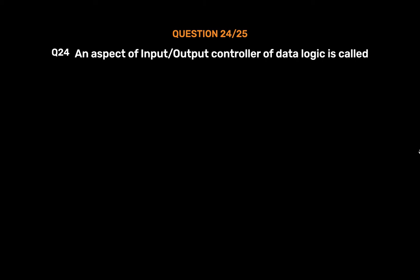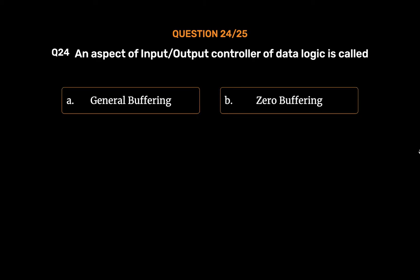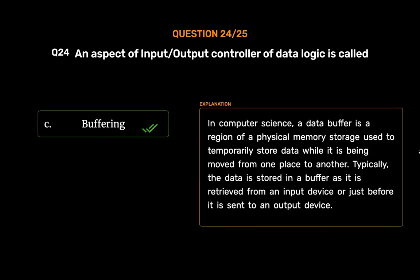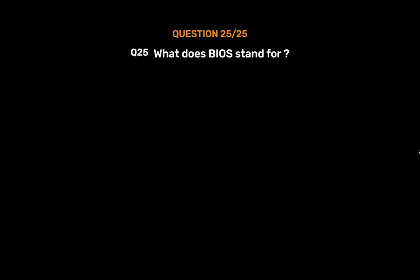Question No. 25: An aspect of input/output controller of data logic is called — Option A: General buffering, Option B: Zero buffering, Option C: Buffering, Option D: Data buffering. The correct answer is Option C, Buffering. In computer science, a data buffer is a region of physical memory storage used to temporarily store data while it is being moved from one place to another. Typically, the data is stored in a buffer as it is retrieved from an input device or just before it is sent to an output device.